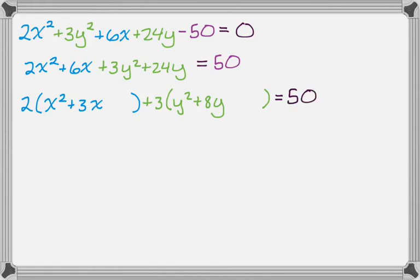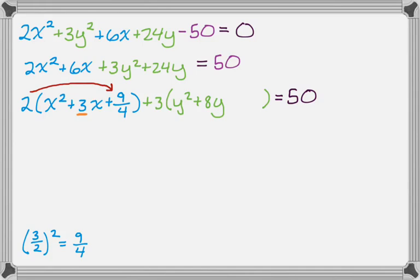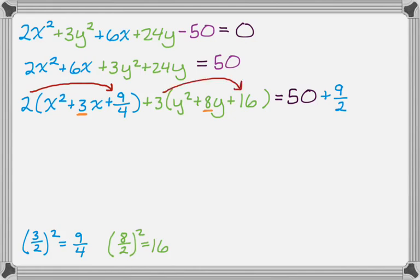Now I look inside the parentheses. The coefficient of x squared is 1, so I focus on the 3 — divide by 2 and square it, giving me 9/4. Here's where a lot of people make mistakes: it looks like I added 9/4 to the left side, but I actually added 2 times 9/4. So I add 2 times 9/4, which is 9/2, to the right side. For y, the coefficient is 1, so I focus on 8 — divide by 2, square it, giving me 16. I add 16 inside the parentheses, but I'm really adding 3 times 16 to the right side, which is 48.